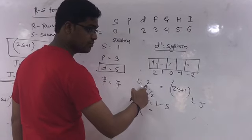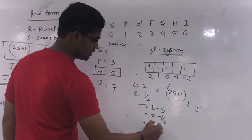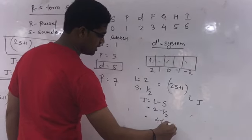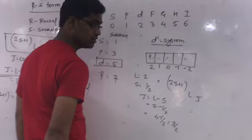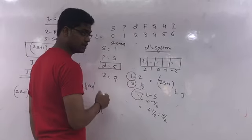L value is 2. S value is half. So, 2 minus half, which is 2 minus 1 divided by 2, that is 3 by 2. Now, we have J value, L value, and S value.